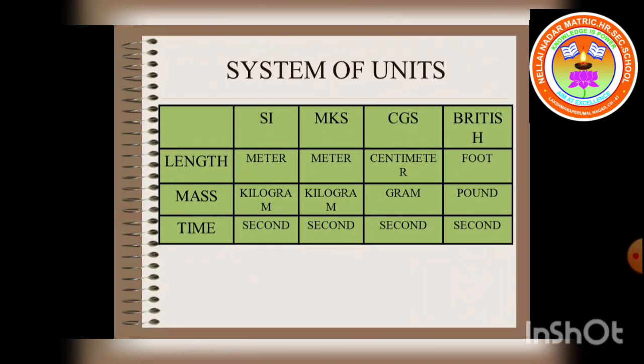System of units. Earlier, different unit systems were used by people from different countries. Some of the unit systems followed earlier are given here. Look at the tabular column clearly students. Length in SI units is called meter. The same length unit in MKS system is also called meter, but in CGS system is called centimeter.